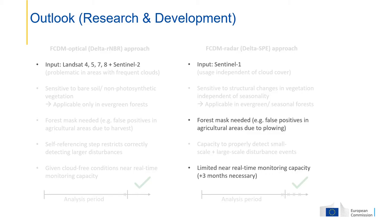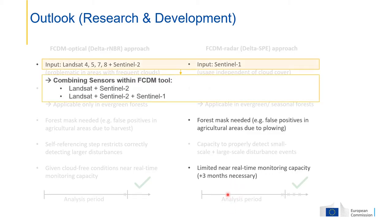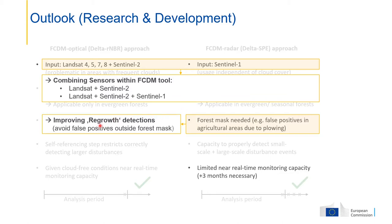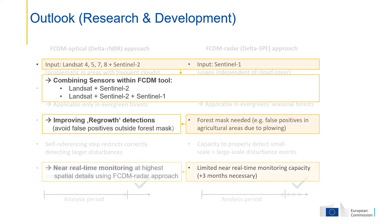For the outlook on research and development: we are working on combining sensors within the FCDM tool — not just Landsat combinations, but also combining Landsat with Sentinel and combining the optical and radar-based approaches. We want to improve regrowth detection, as regrowth works outside forest masks and we have to deal with false positives. Last but not least, the near real-time component should be improved for the radar-based approach, ideally while keeping the high spatial detail. Thank you very much for listening.